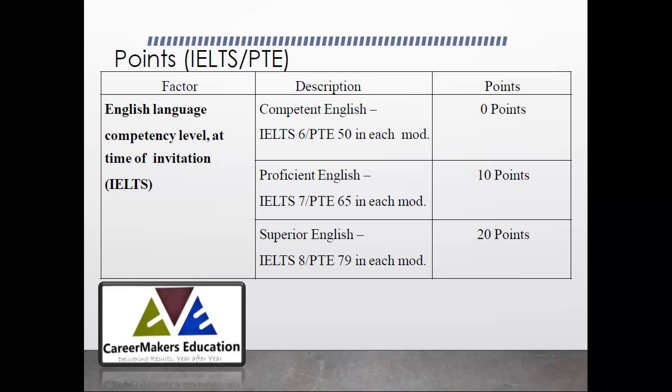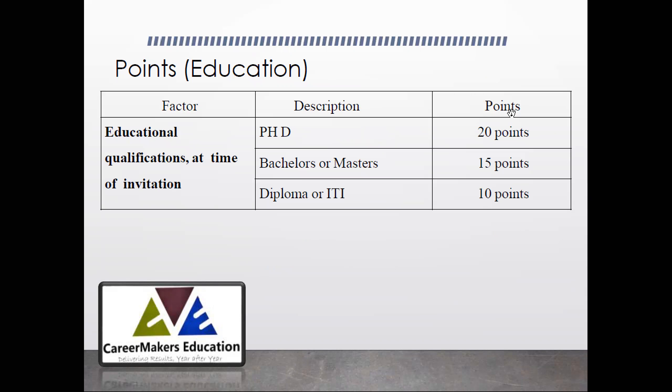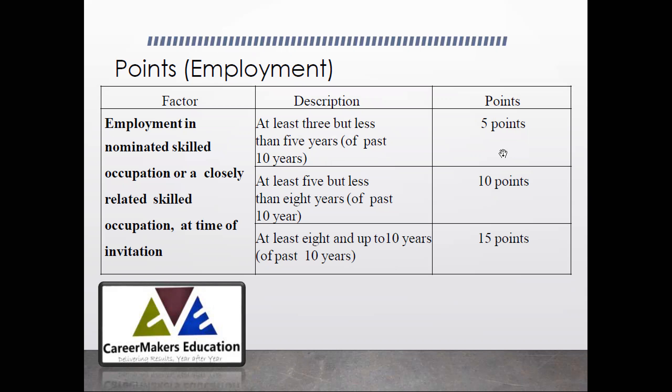The more you score, the better are your chances of getting Australia PR. You also get points for your education: if you have done a PhD, you get 20 points; a Bachelor's or Master's degree carries 15 points; and a diploma or ITI gives you 10 points. It is important to note that only government-recognized educational institutions qualify — if you have a degree from a private university or college not recognized by the government, you would likely not get points for education.